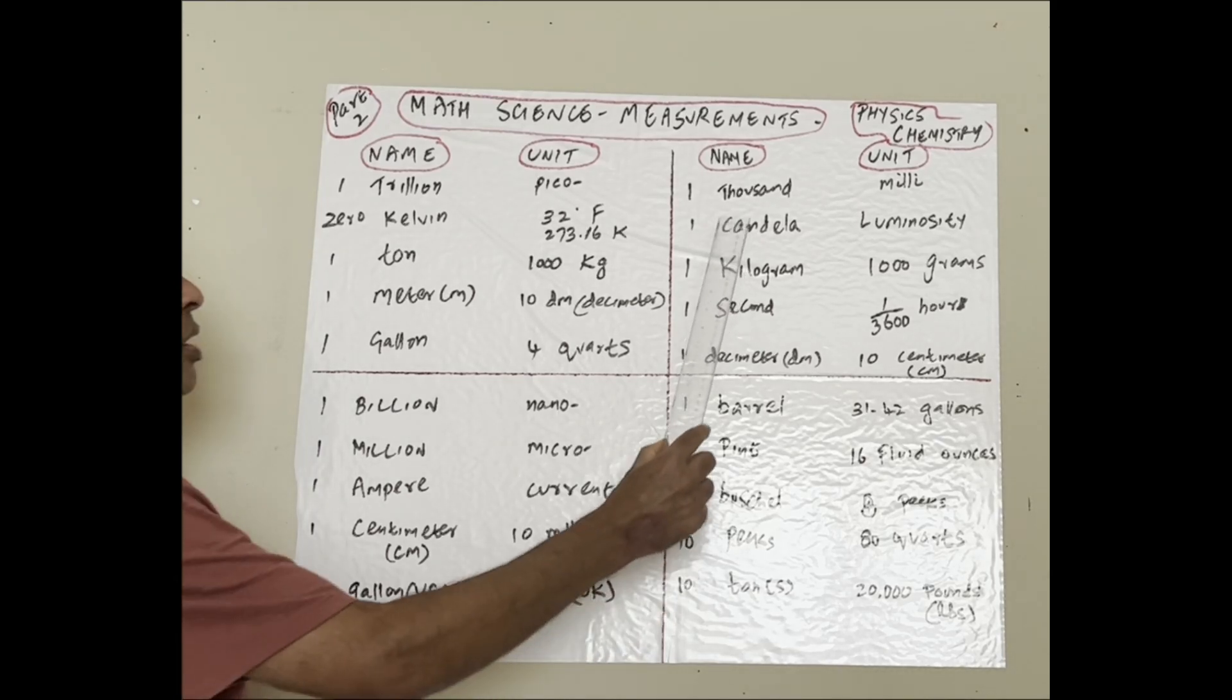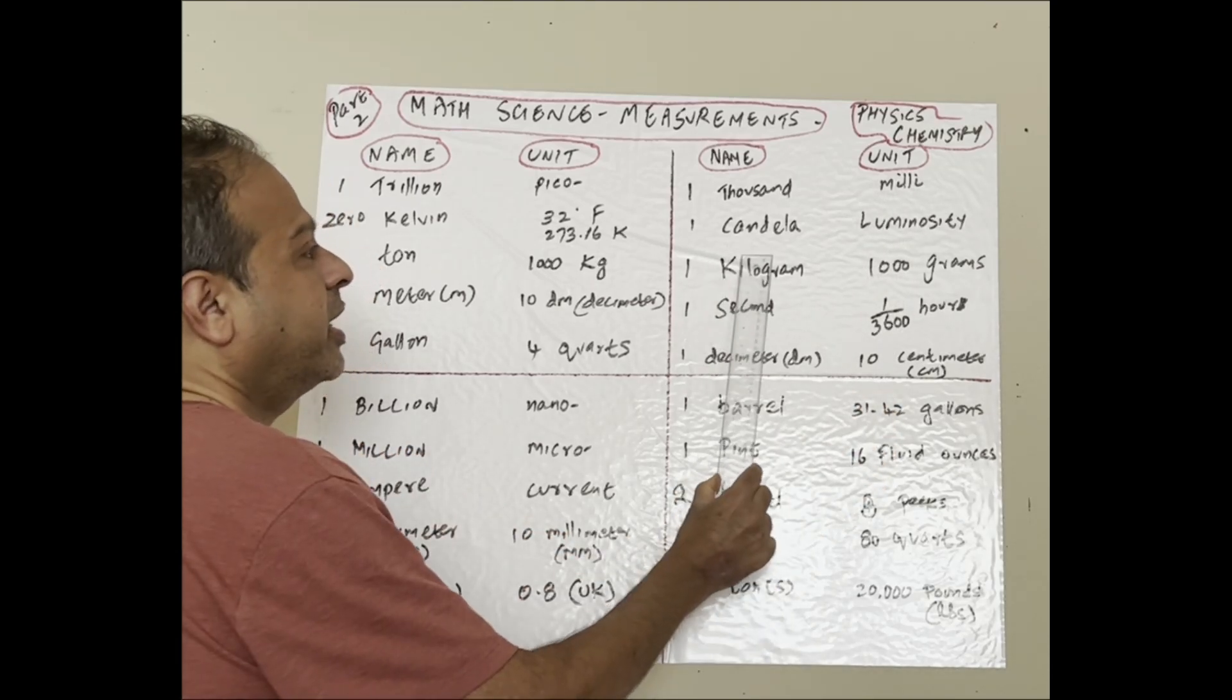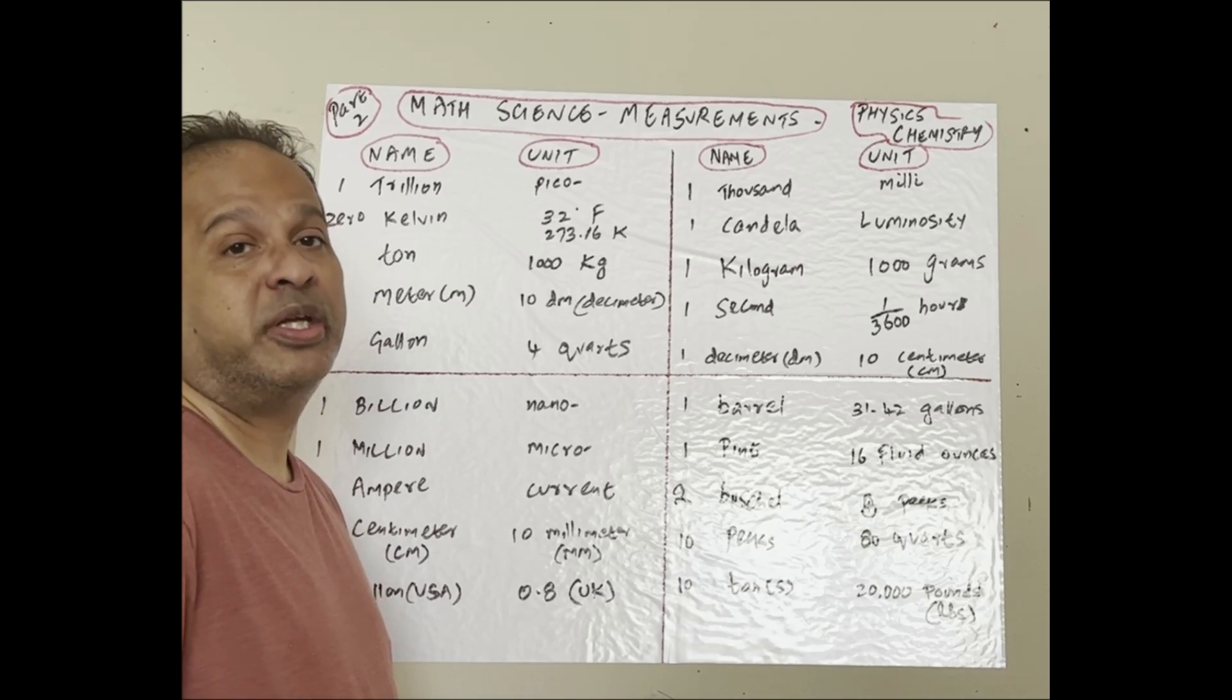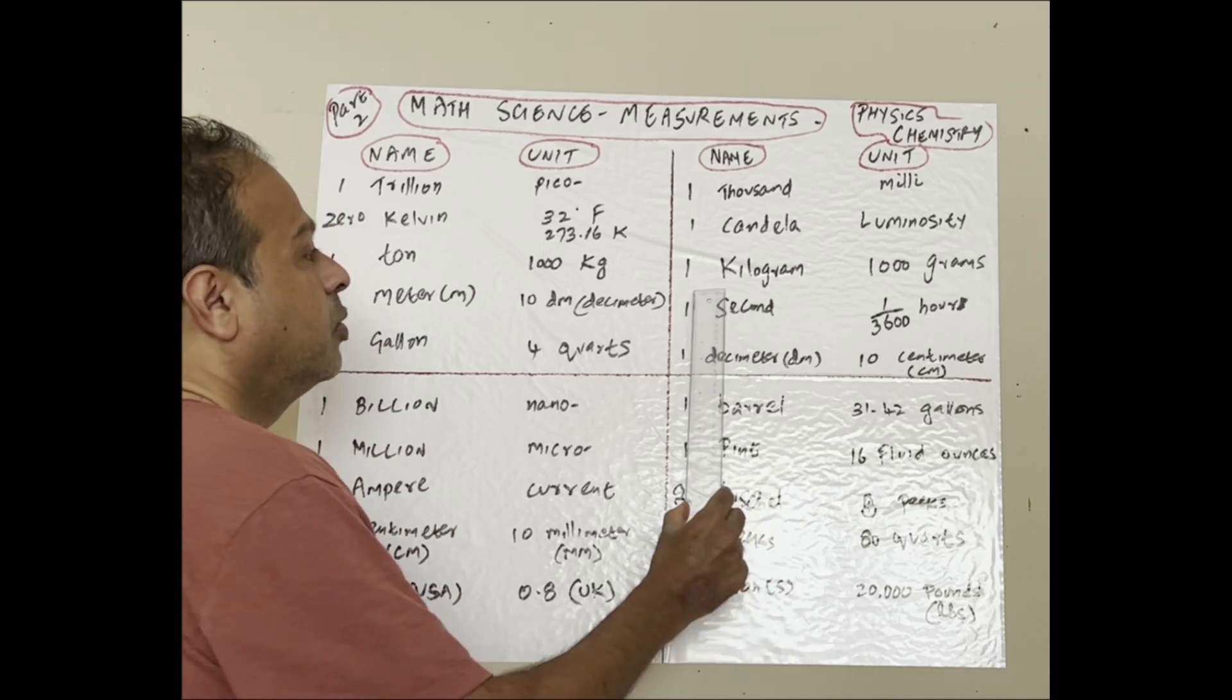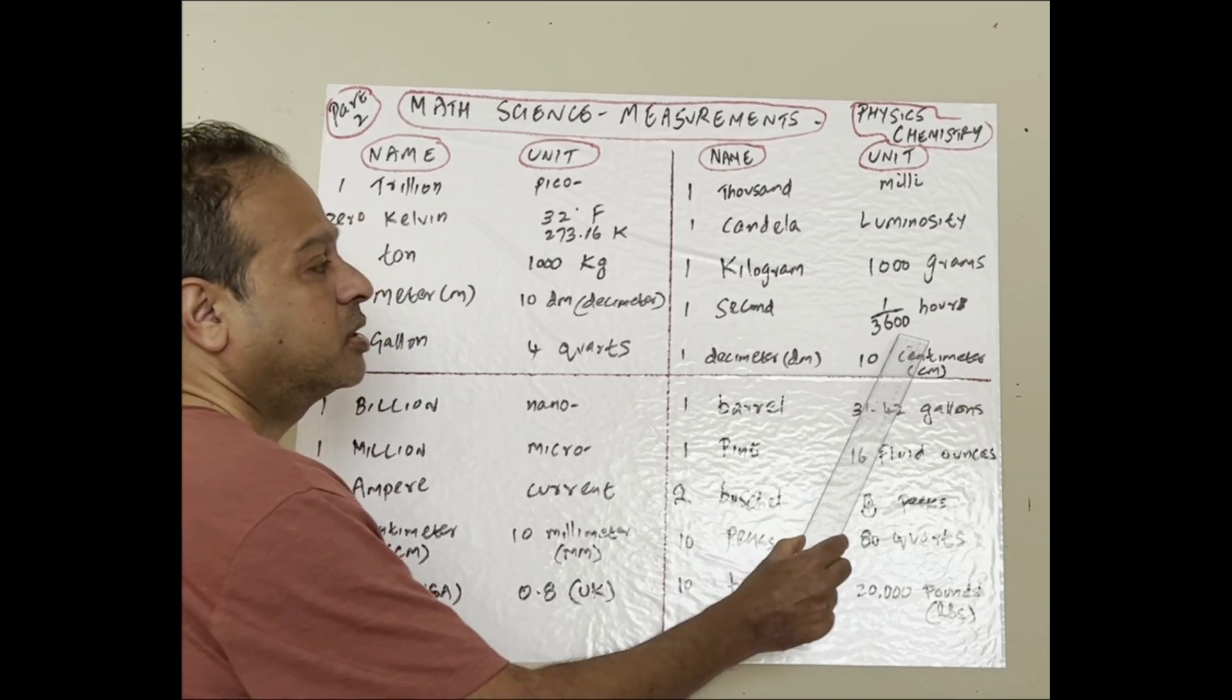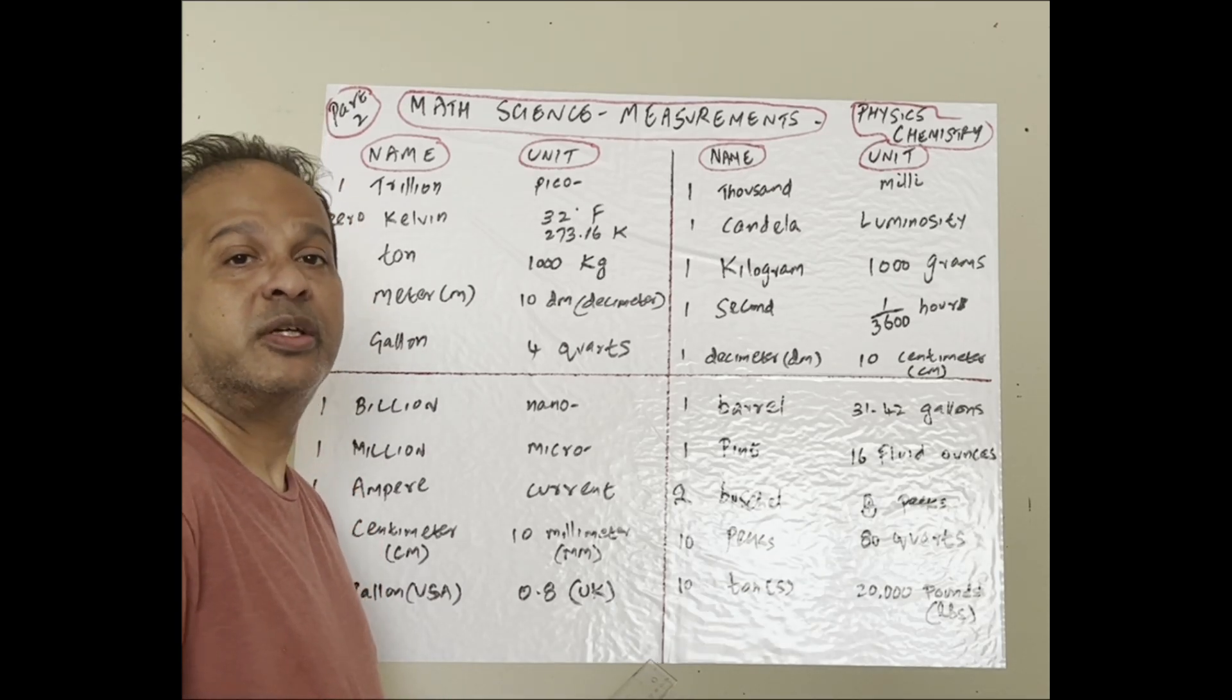One thousand is milli. One candela is related to luminosity. Lumin means light. One kilogram is 1,000 grams. One second is 1/3,600 of an hour. An hour has 60 minutes, one minute has 60 seconds.